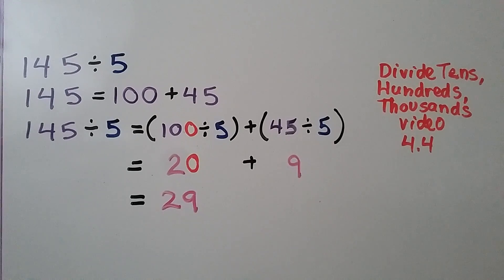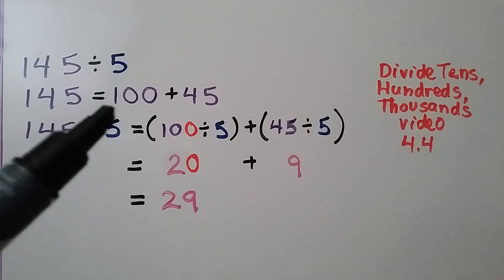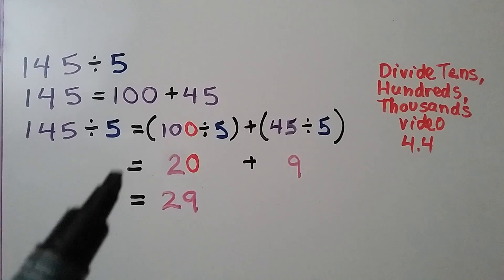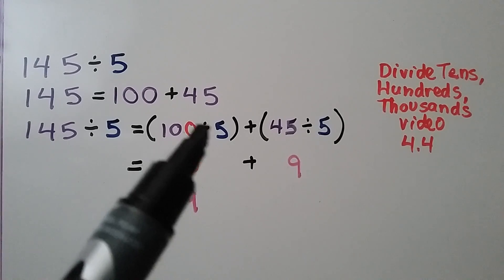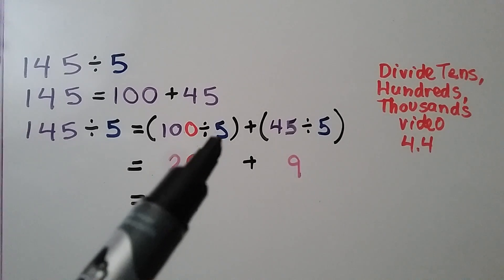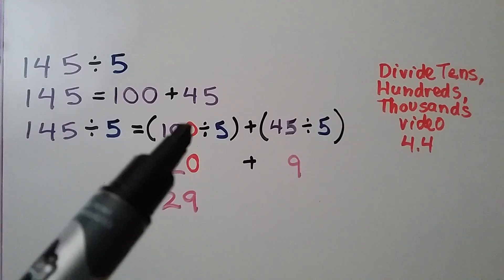If we have a larger number like 145 divided by 5, we can break it into a 100 plus 45. We think 100 divided by 5 plus 45 divided by 5. And 10 divided by 5 is 2. We have a 0 here,